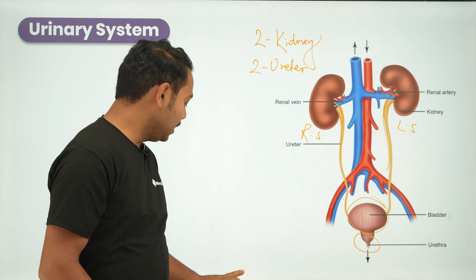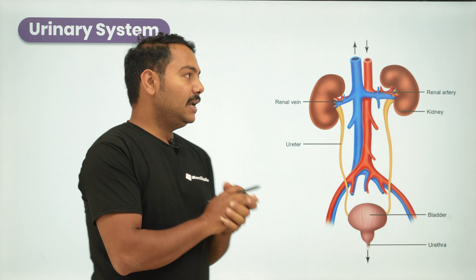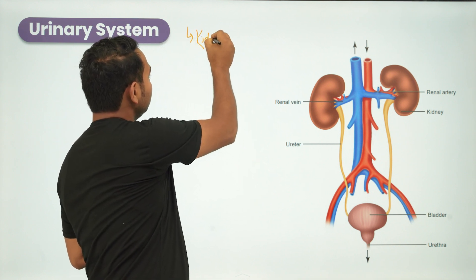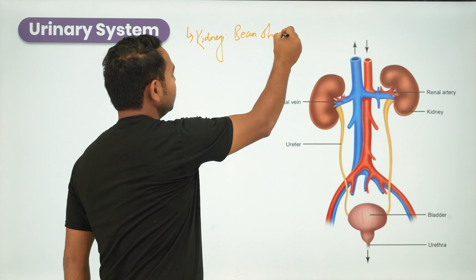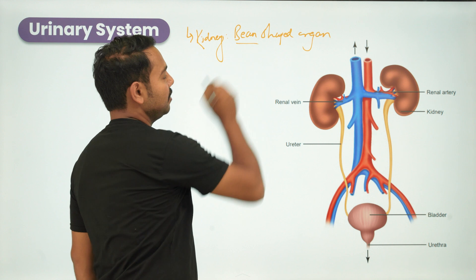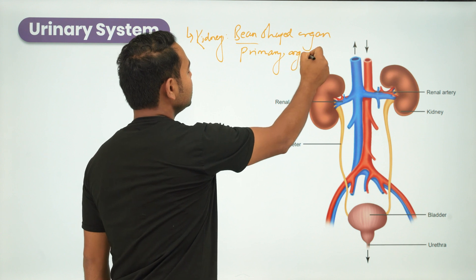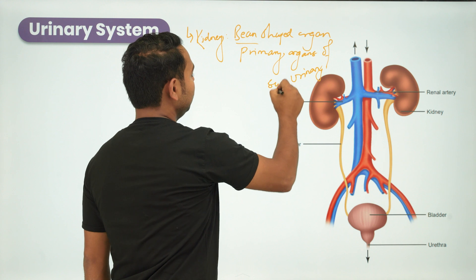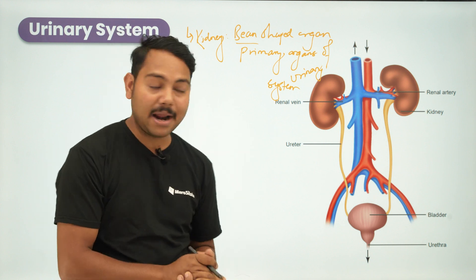Now I will talk about the kidney. The kidney is a bean-shaped organ. Kidneys are the primary organs of the urinary system.